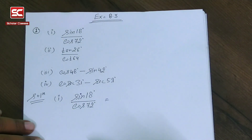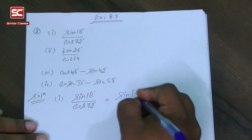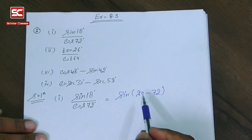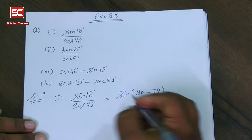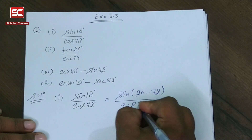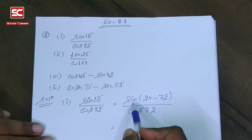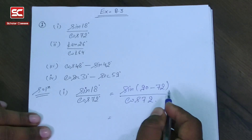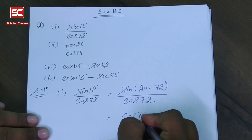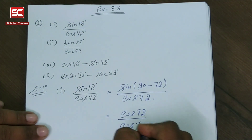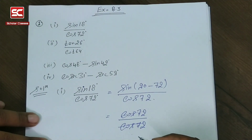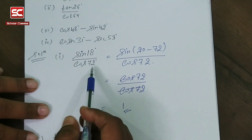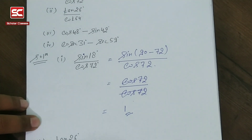We change sin 18 as sin(90 minus 72). We know that sin(90 minus theta) is equal to cos theta, so sin(90 minus 72) is equal to cos 72. Therefore, cos 72 divided by cos 72 cancels, and the final answer is 1.